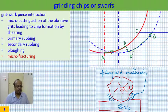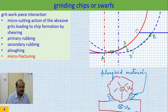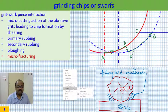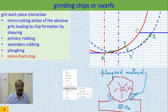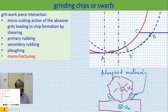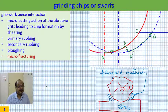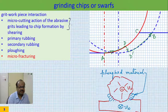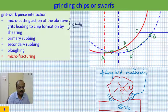We already know what the material removal mechanisms in grinding are — that has been dealt with in detail. I will simply go through the basics once again so you can recollect easily. There is micro cutting action, and by this micro cutting action chips are produced. This micro cutting action is very much like the micro milling action of the abrasive grits.